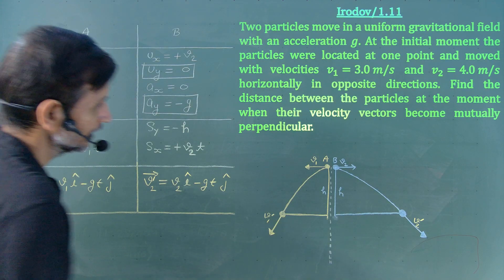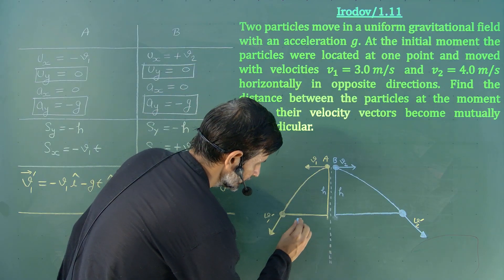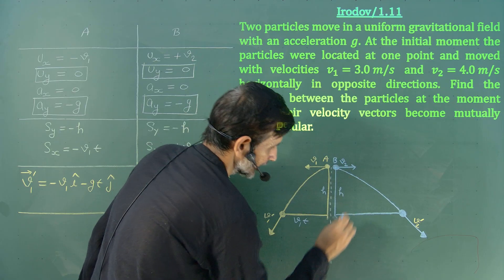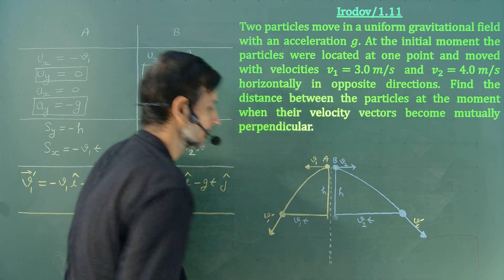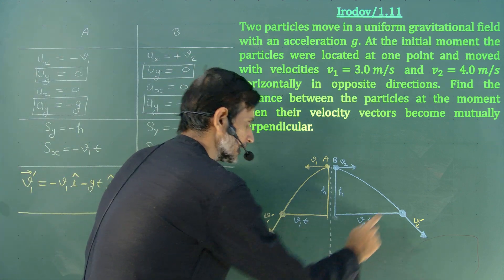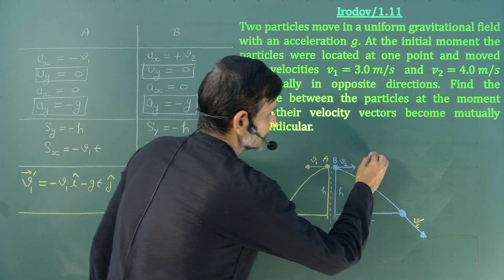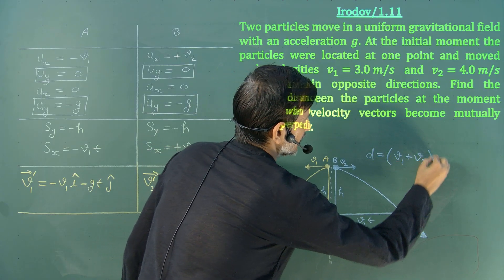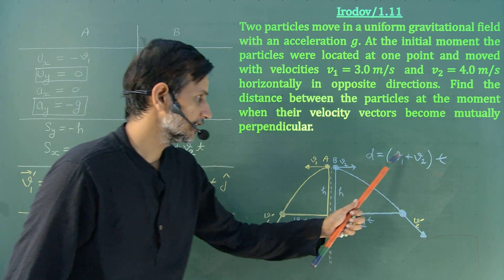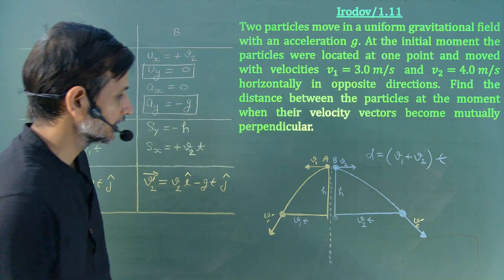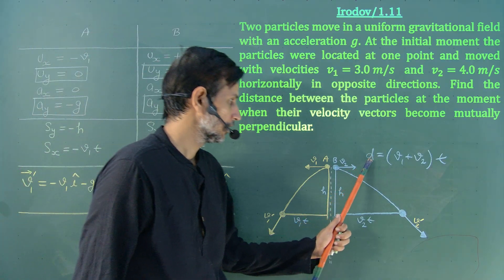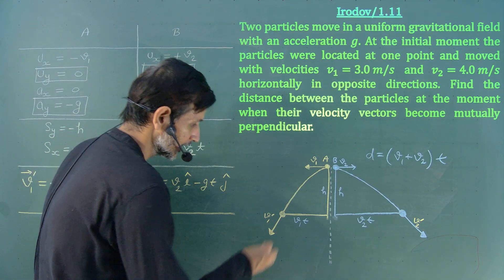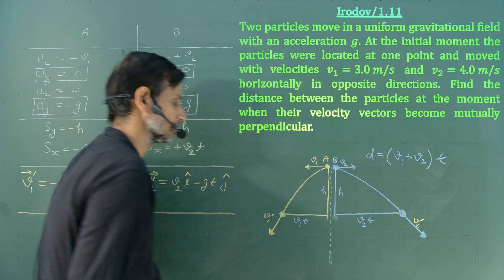Since there is no acceleration in the x direction, the x-distance of particle A is v1·t and the x-distance of particle B is v2·t. So the total distance between particles A and B is d = (v1 + v2)·t. Since v1 and v2 are given but t is not, we need to calculate time t using the extra condition that at this moment the two velocity vectors are perpendicular.